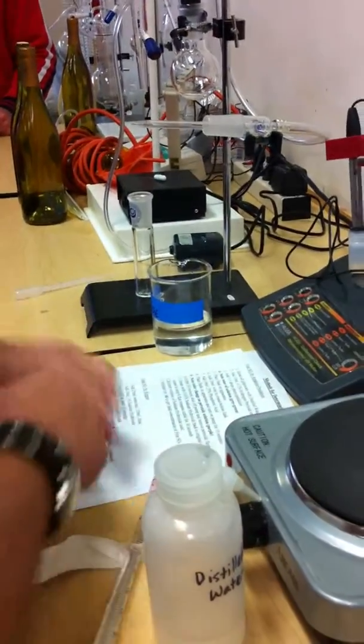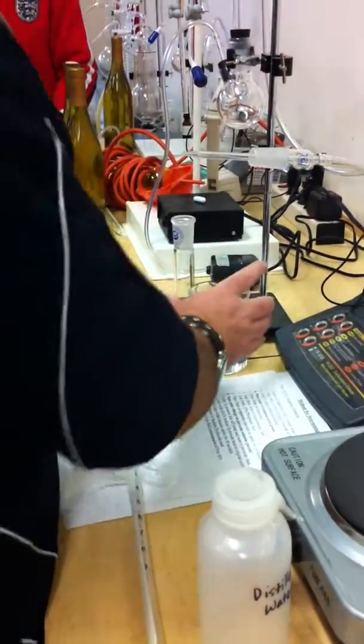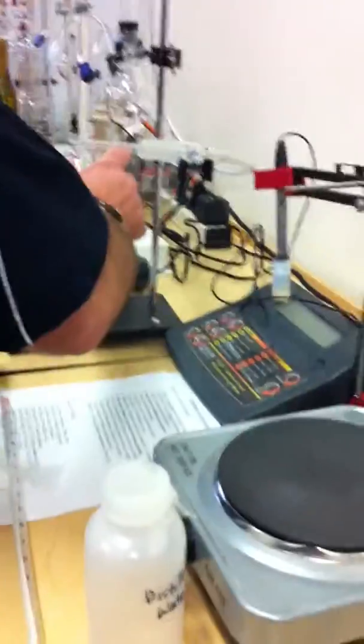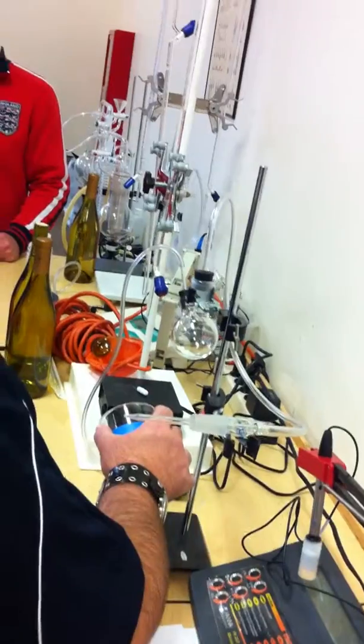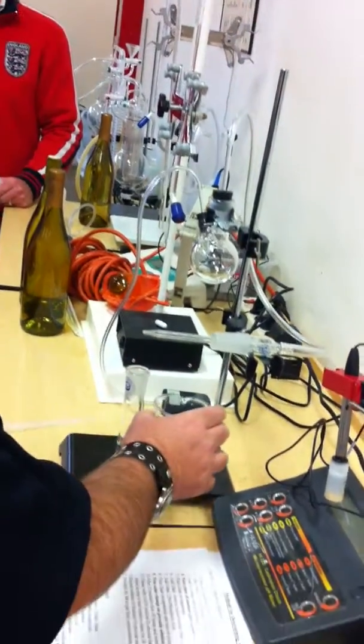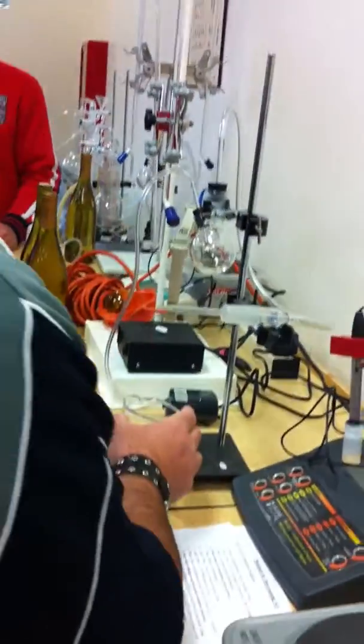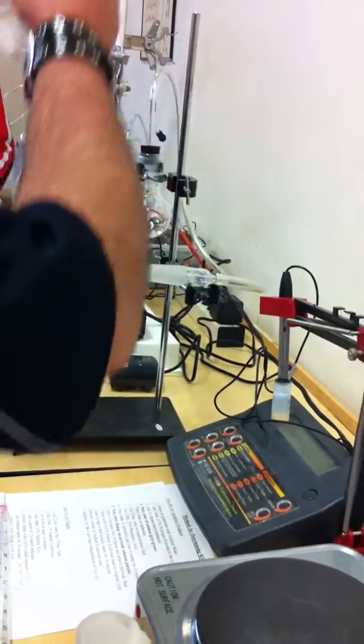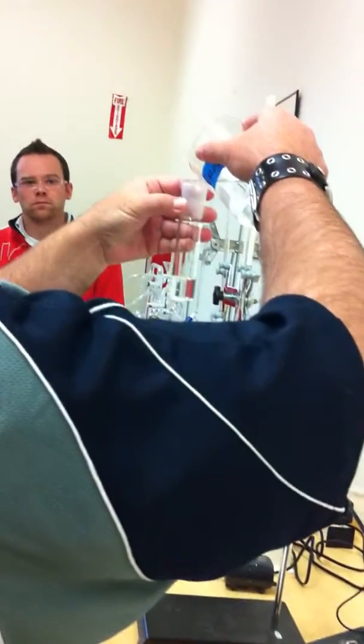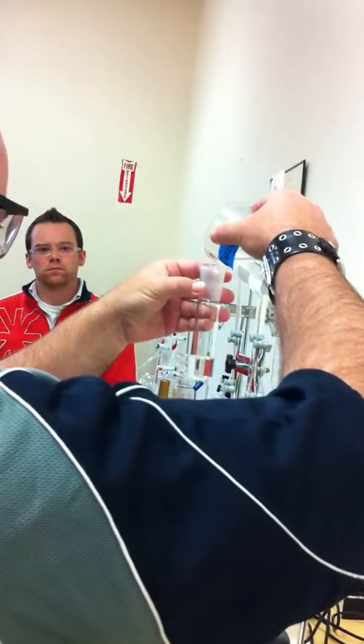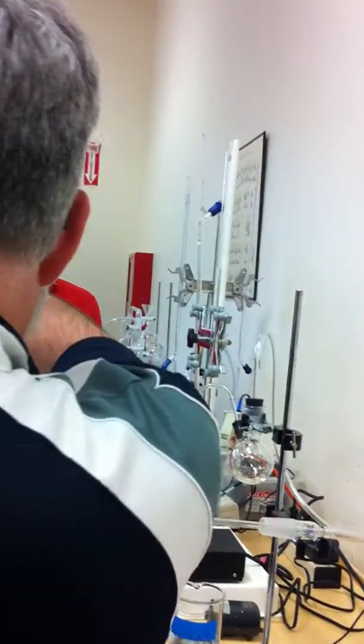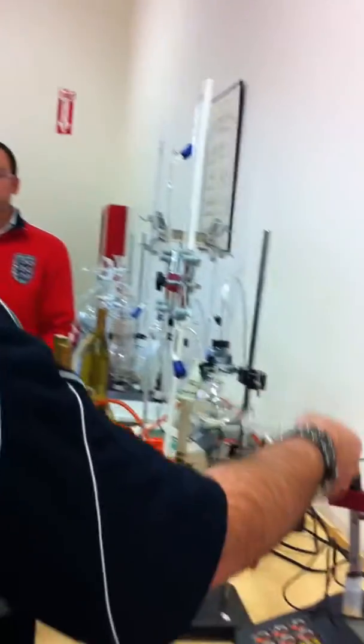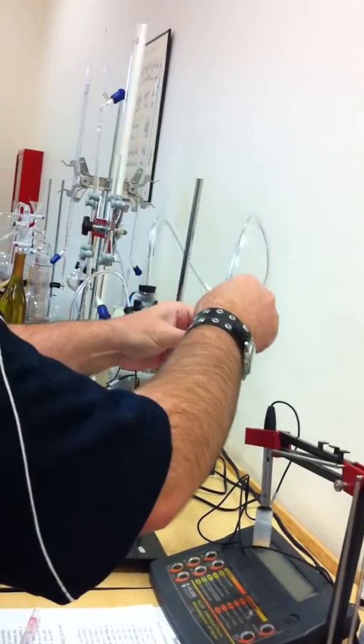You can either use the pipette, you know, 10 mils in, or this line is 10 mils, so you can just pour it in. So that's where you're going to add. I don't want the panel heading to the meniscus.